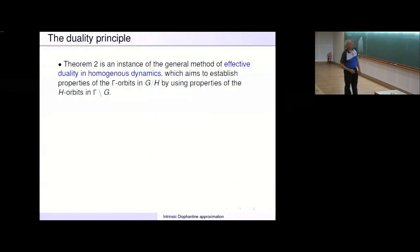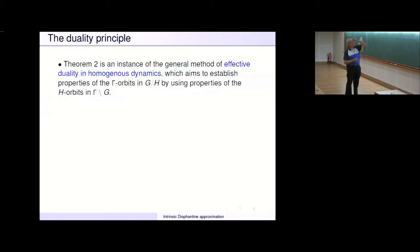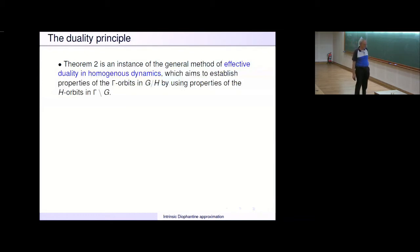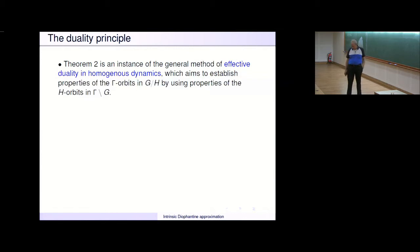Theorem 2 is an instance of the general method of effective duality in homogeneous dynamics, which in general aims to establish properties of the Gamma-orbits in G mod H by using properties of the H-orbits in G mod Gamma. This principle has a very long history and many aspects. It was used in many different situations in homogeneous dynamics. Dimitri and others have mentioned the Dani correspondence, which is really an application of this idea of duality, from the early 1980s.